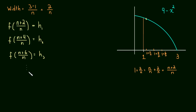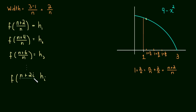So now we have enough to conclude what the height of the i-th rectangle is. This is pretty much the hardest part — figuring out a formula that gives you the height of the i-th rectangle. In this case it's f of n plus 2i over n. Because for the second rectangle, n plus 2 times 2 is 4 — that works. Third rectangle, n plus 2 times 3 is 6 — that works.